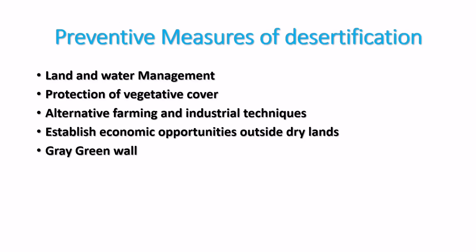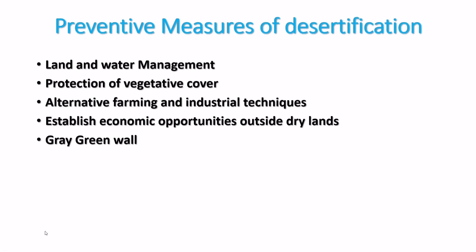Preventive measures of desertification include land and water management, protection of vegetative cover, alternative farming and industrial techniques, new technologies, establishing economic opportunities outside dry lands, and building a green wall. These are the preventive measures of desertification.